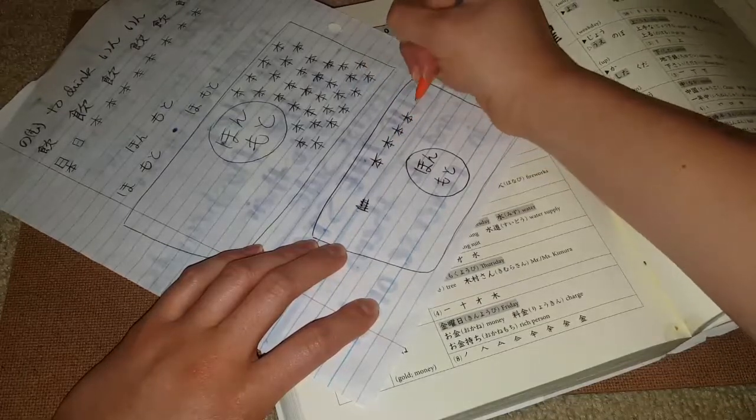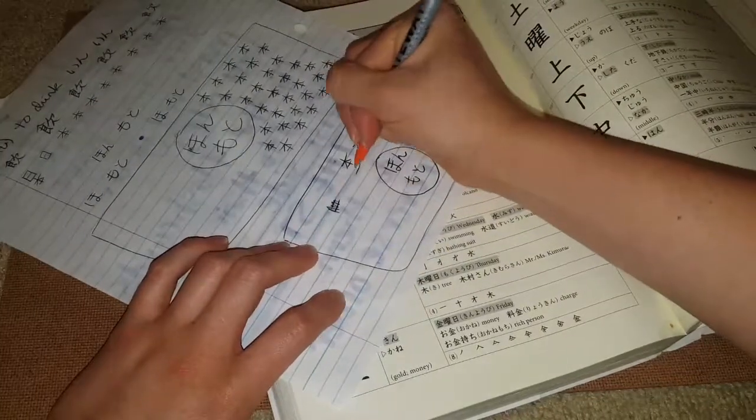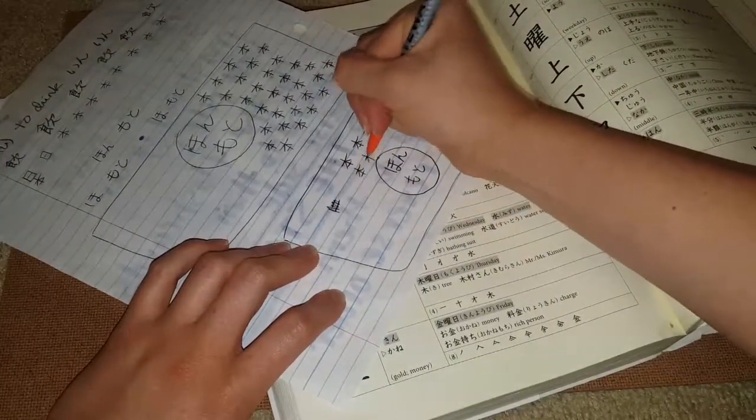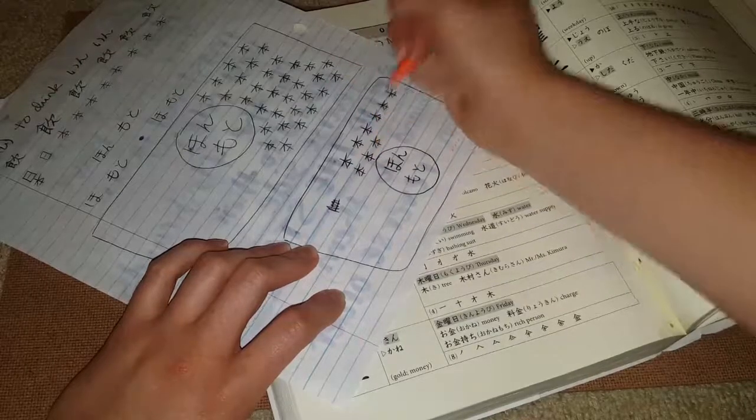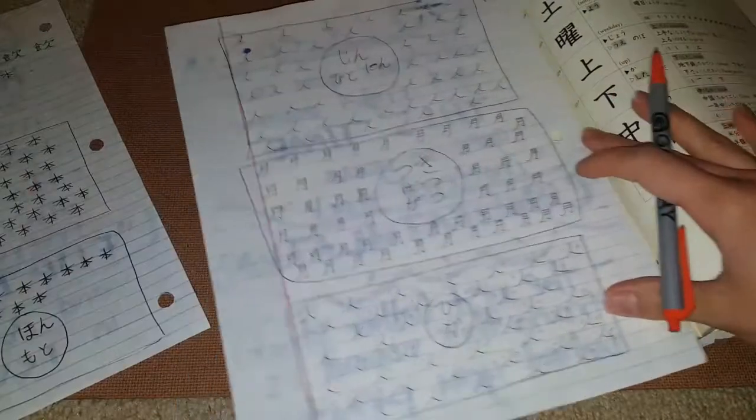And then every once in a while I'd be like, moto, hon, moto, hon, hon, moto. And I just kept going over and over again. And basically I did that for all the kanji I was doing.